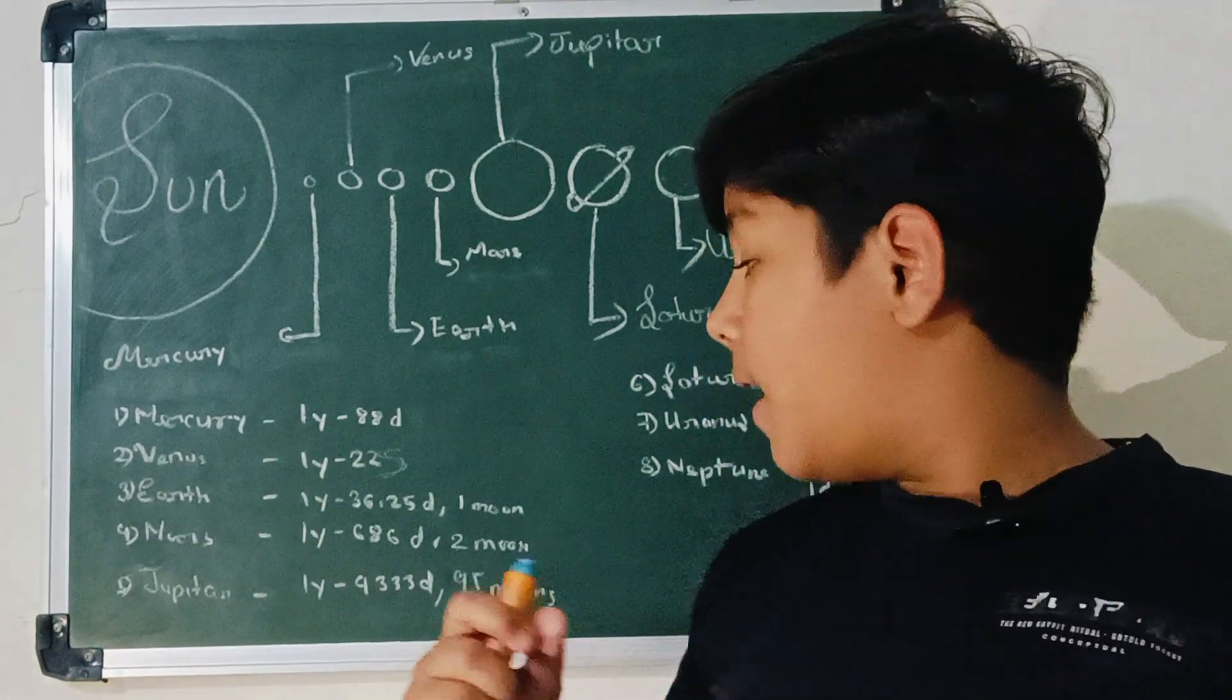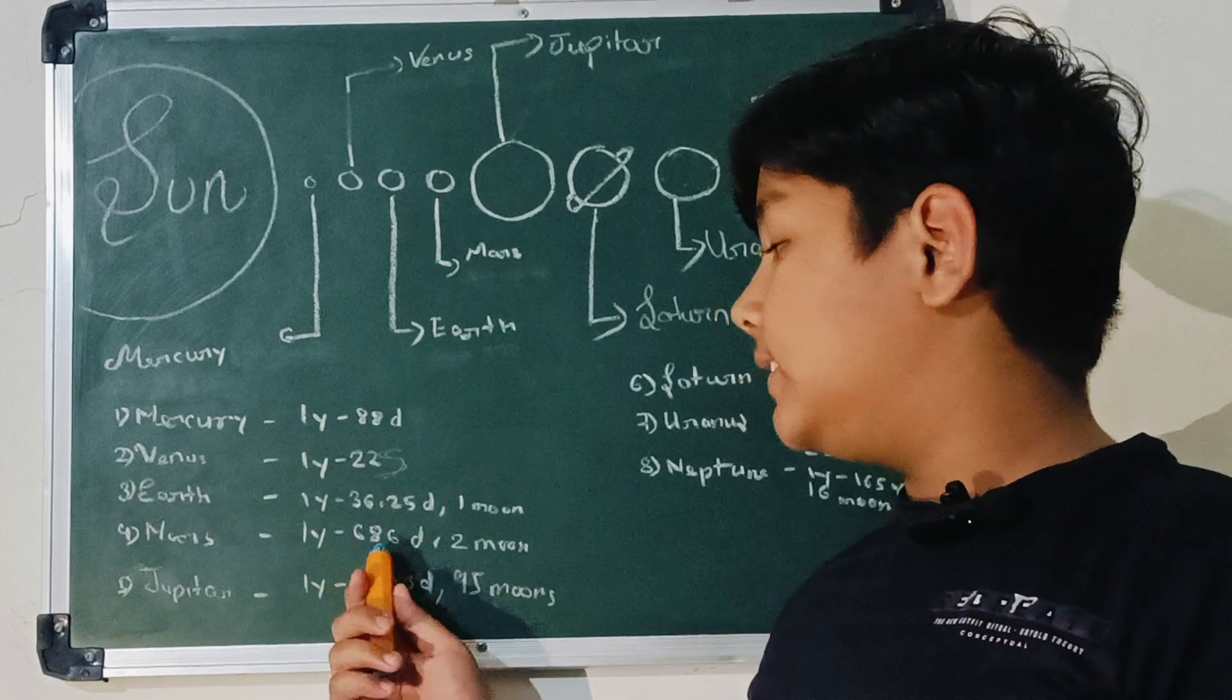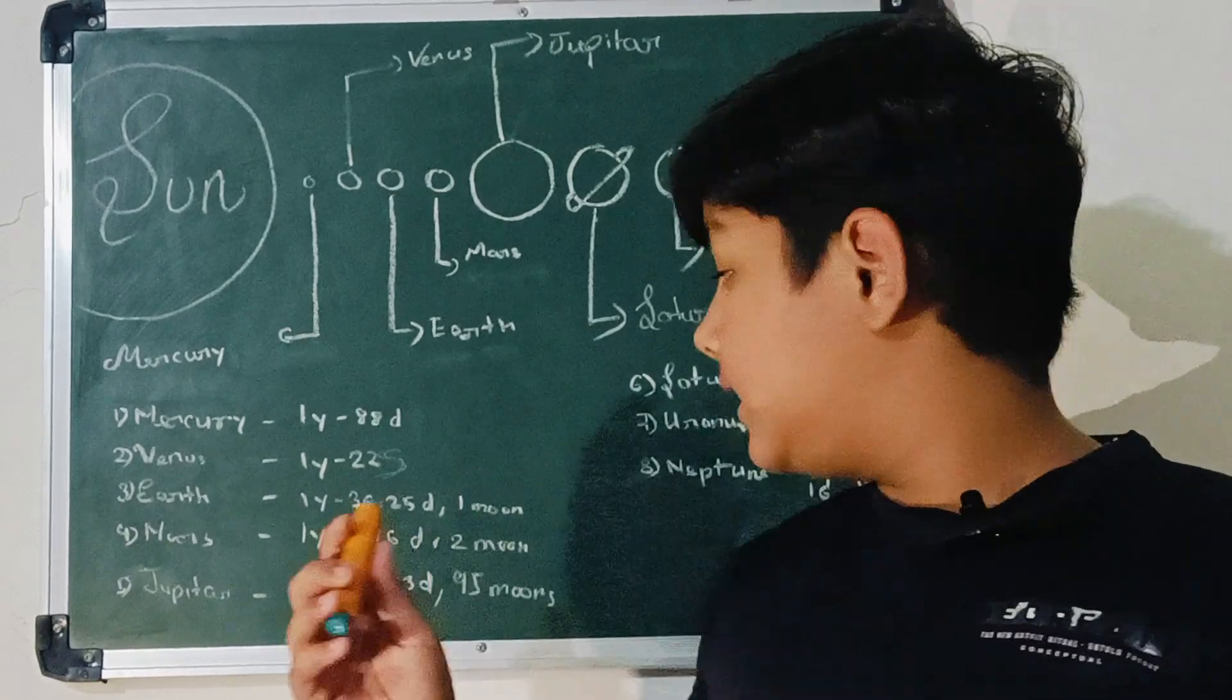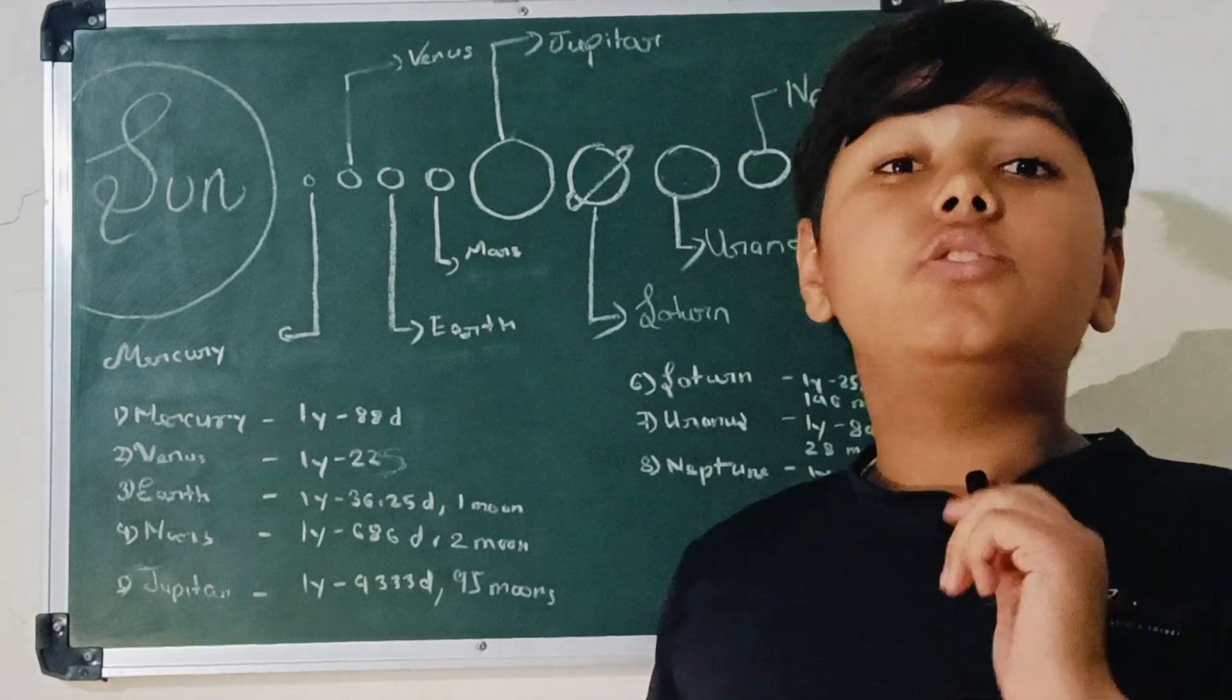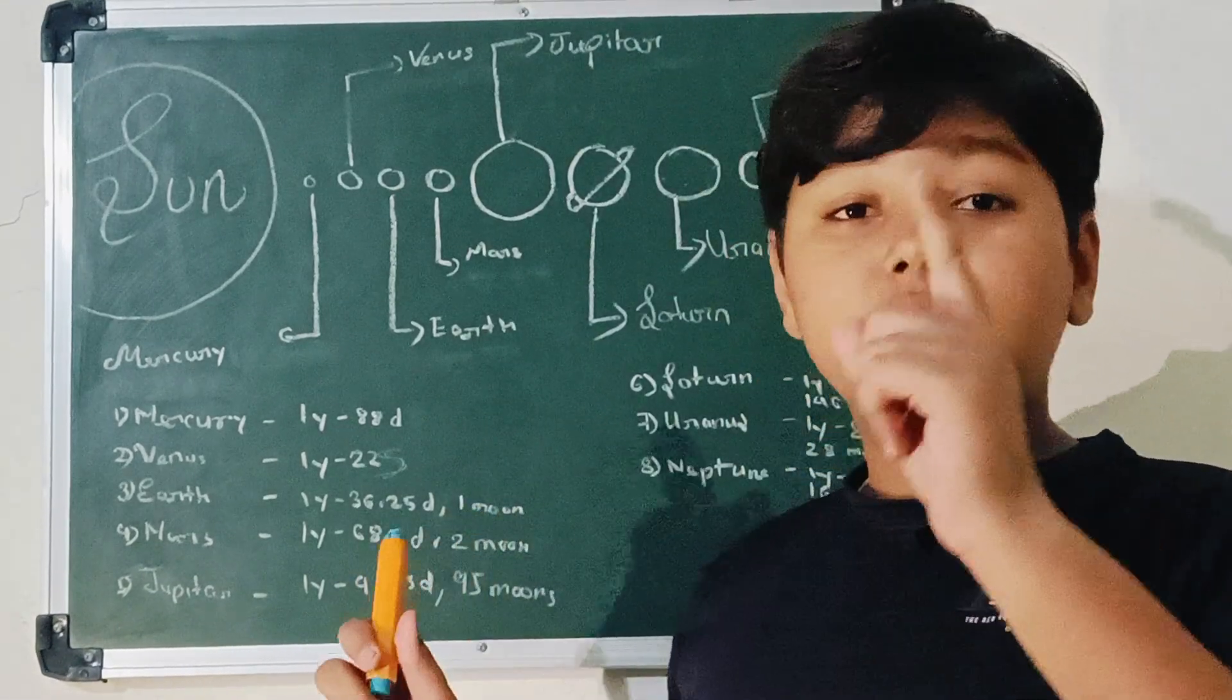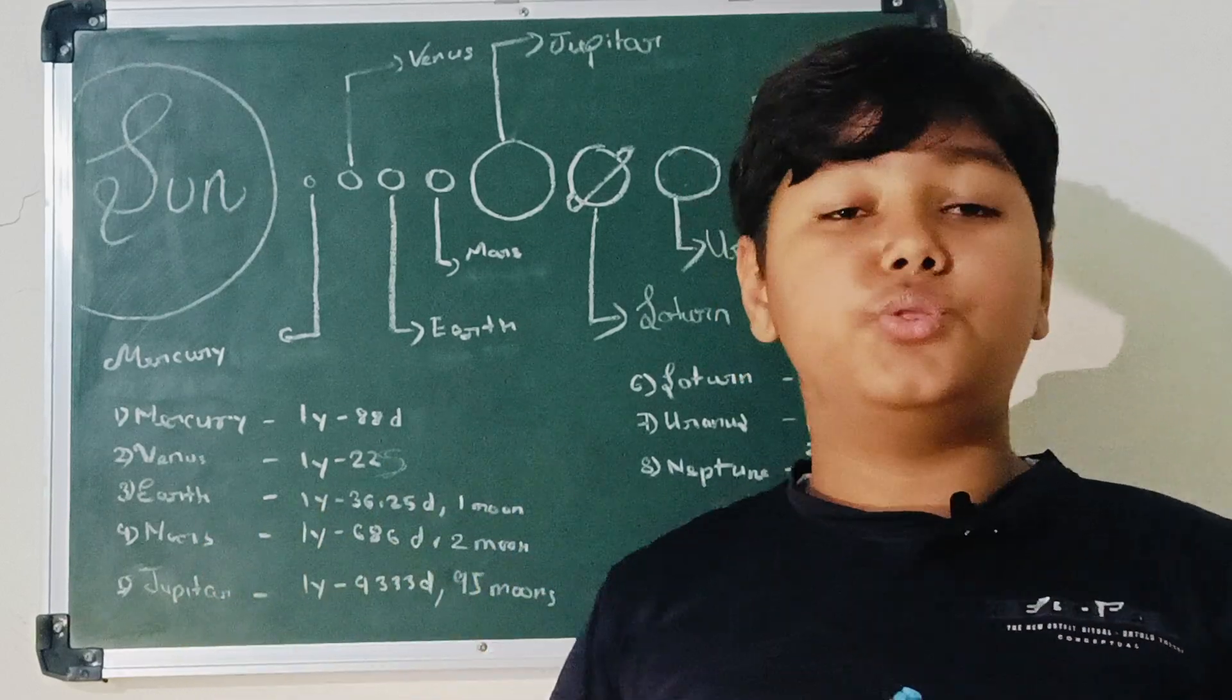One year of Mars is equal to 368 days and 386 days of Earth. It has 2 moons. Our Earth has a single moon, but Mars has 2 moons.